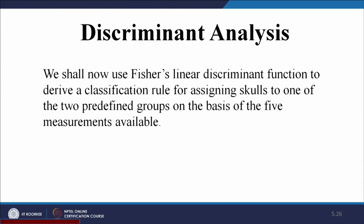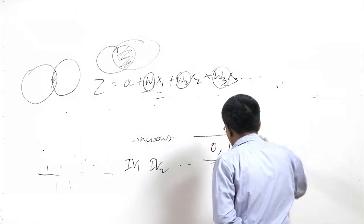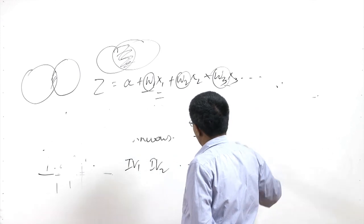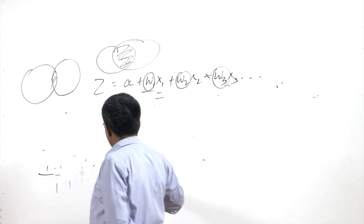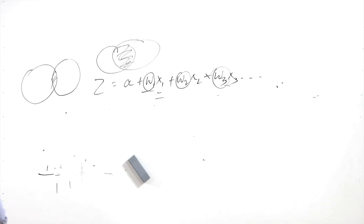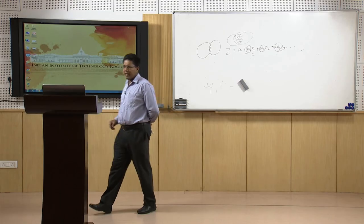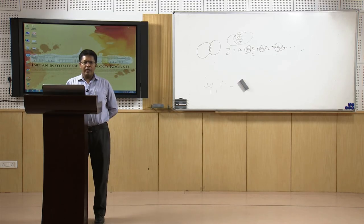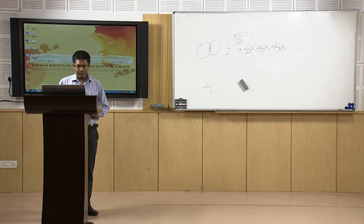We use Fisher's linear discriminant function, which provides a Z value. Once you have the Z value, it becomes easier to know which group a case belongs to.